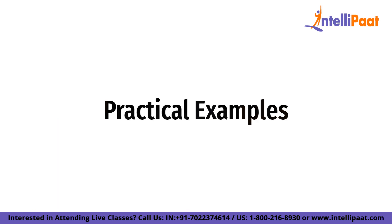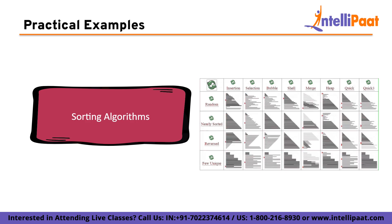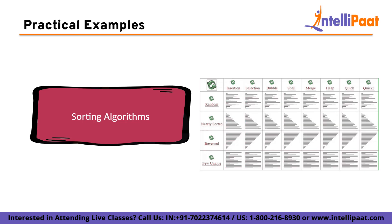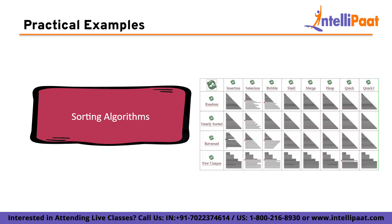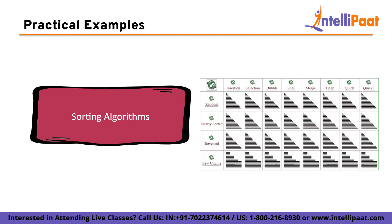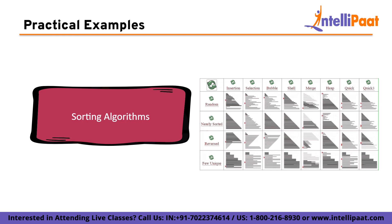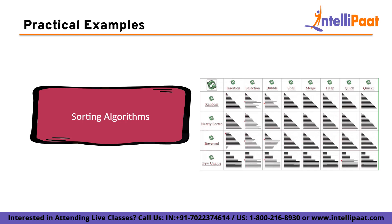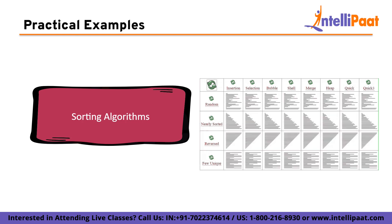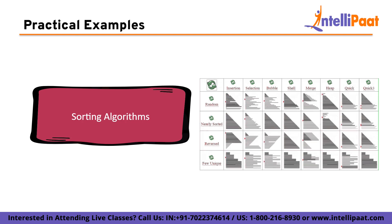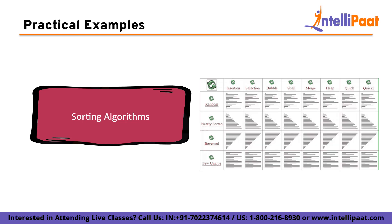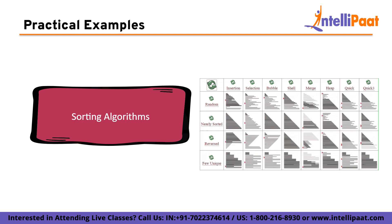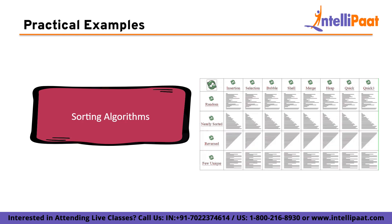Sorting algorithms are a classic example of analyzing and comparing time complexity. Algorithms like bubble sort, insertion sort, and selection sort have a time complexity of O(n²) as they involve nested loops. In contrast, more efficient sorting algorithms like merge sort and quick sort have a time complexity of O(n log n). Additionally, in-place sorting algorithms like quick sort have a space complexity of O(1), while merge sort has a space complexity of O(n) as it requires additional memory to merge subarrays.